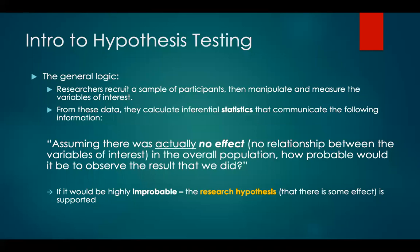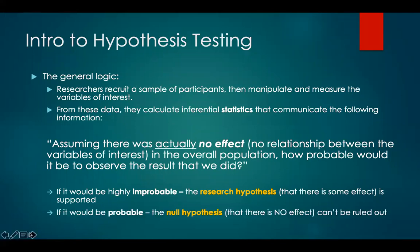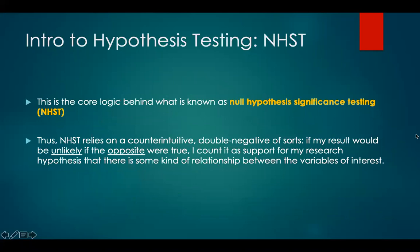If it would be highly improbable to obtain the data that we did under the circumstances that there actually is no effect, the research hypothesis that there is some effect is supported. But if it would be probable to obtain the data that we collected when there is no effect in the population, then the null hypothesis — the hypothesis that there is no effect — can't really be ruled out. This is the core logic behind what is known as null hypothesis significance testing, or NHST.